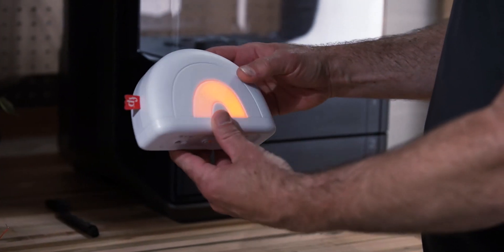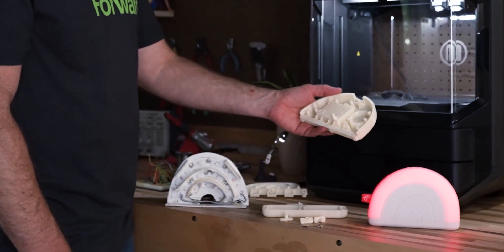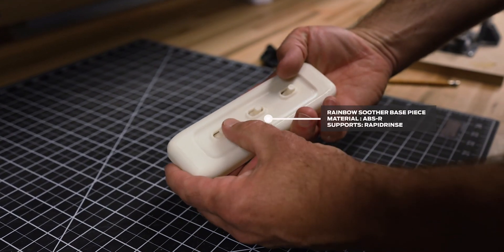For example, a soother for the baby's room. First, we made a prototype out of styrene. Then we use ABS and the rapid rinse because it's close proximity to the end product.